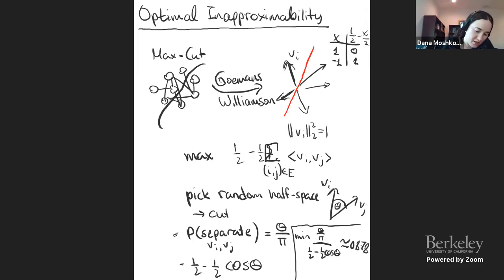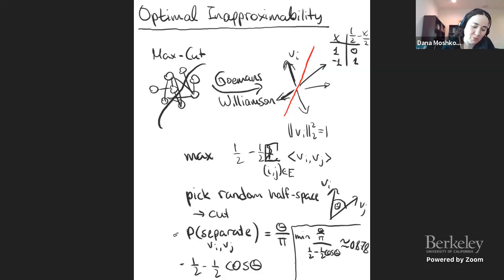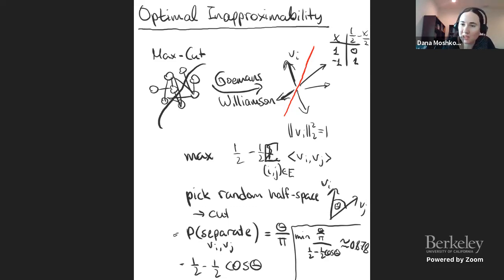In the special case where (1/2 - 1/2 · cos θ) equals (1 - δ) for very small δ, the theta/π becomes (1 - (2/π)·√δ). If you remember Erit's talk where she had 1 - δ versus 1 - √δ, this is where it came from. This is the whole Goemans-Williamson algorithm — it gives an 0.878 approximation ratio for MaxCut.